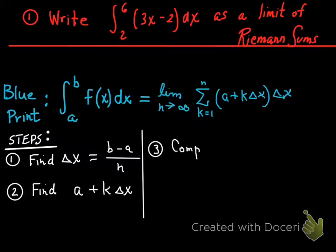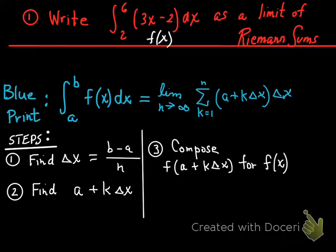The next thing you're going to have to do is compose f at a plus k delta x for f of x. Now look up high there. You got to go back to the original problem and realize what f of x is. F of x in this case is 3x minus 2. And we know how to compose functions. It's like whenever you see that x in the function, you're going to plug in, instead of that x, you're going to plug in a plus k delta x. I know, a plus k delta x. What on earth is that? We'll get to it. But just know that that third step is a composition and you know how to compose functions.